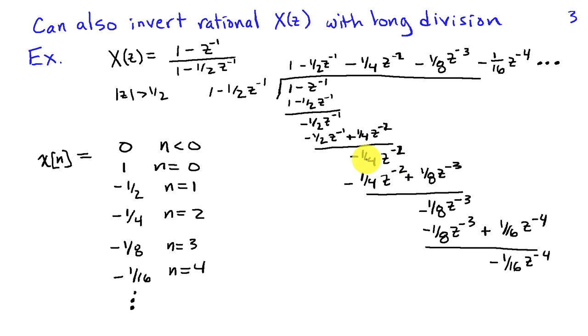Well, to get rid of that term, I'm going to have to multiply my constant out here by minus 1 fourth Z to the minus 2. And I'm left with, after the subtraction, minus 1 eighth Z to the minus 3.